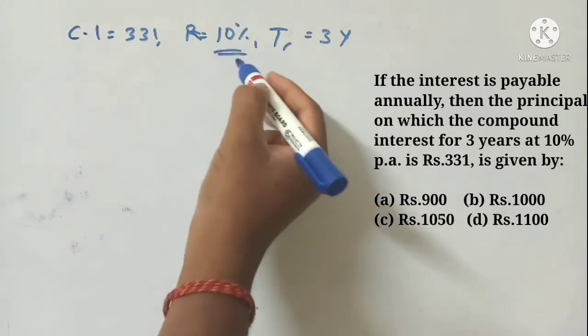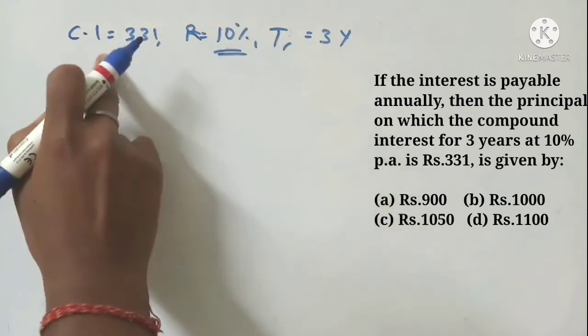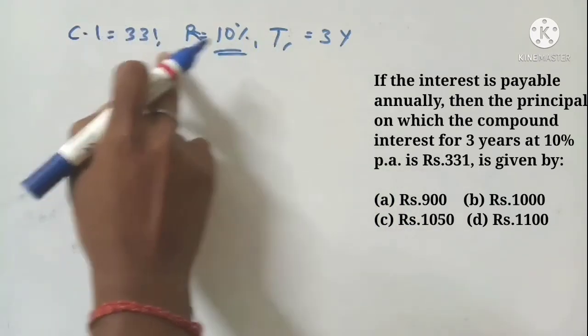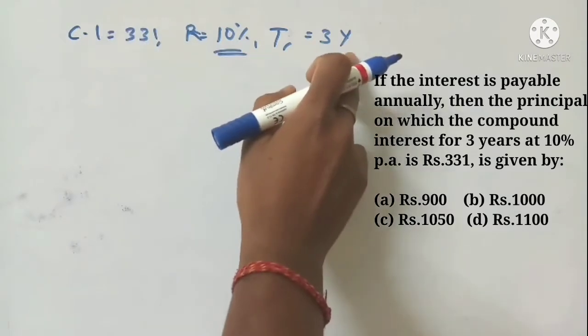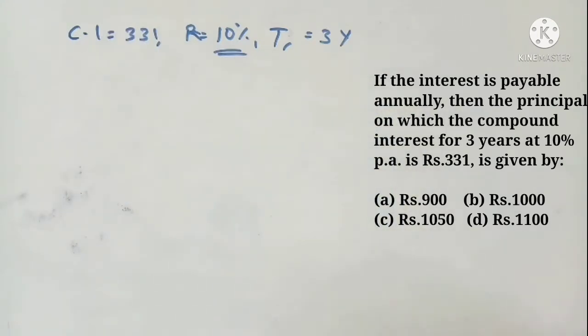This is the percentage, the compound interest, the time, and the principal. Okay.